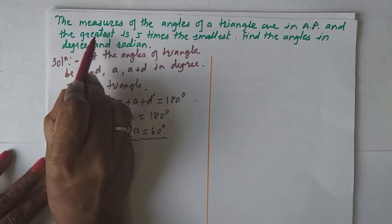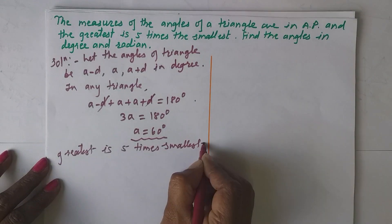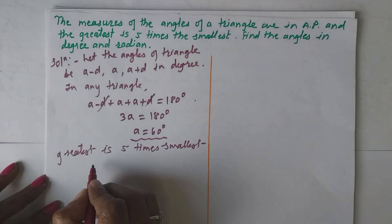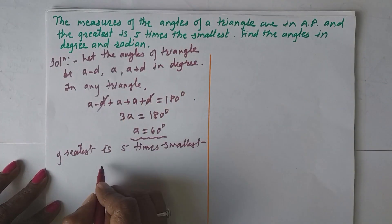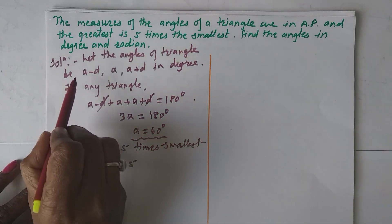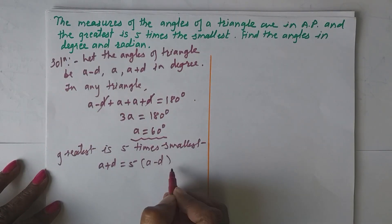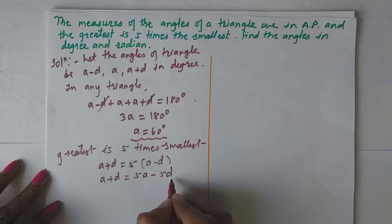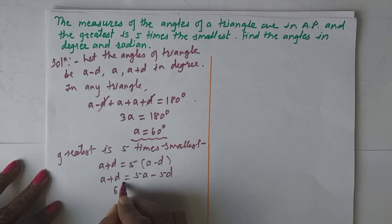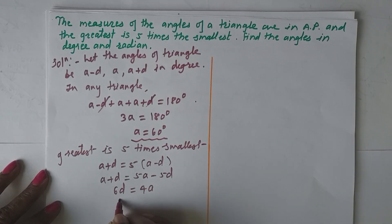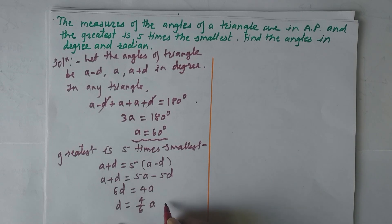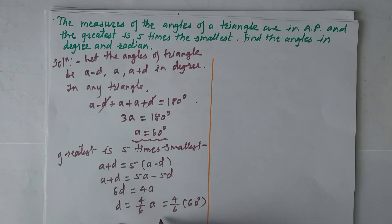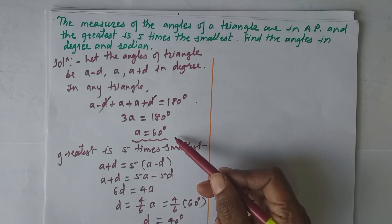The next condition: the greatest angle is five times the smallest. The greatest angle is a+d and the smallest is a−d, so a+d = 5(a−d). Expanding: a+d = 5a−5d, which gives 6d = 4a, so d = (4/6)a. Substituting a = 60°, we get d = 40°.